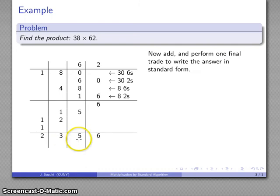And then I do one more total, and there's my final answer. Two thousands, three hundreds, five tens, six. And there's my product: 38 times 62.